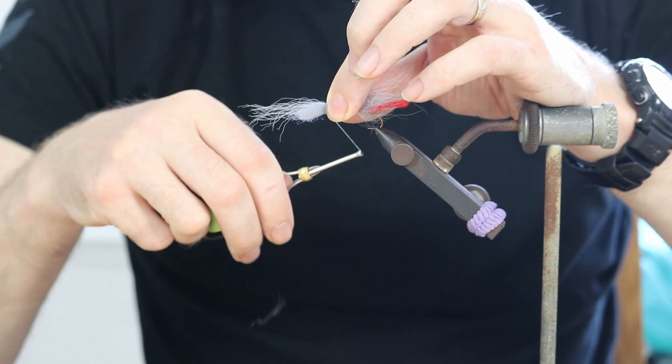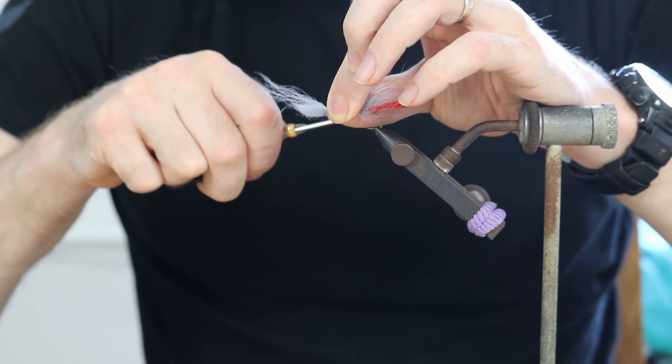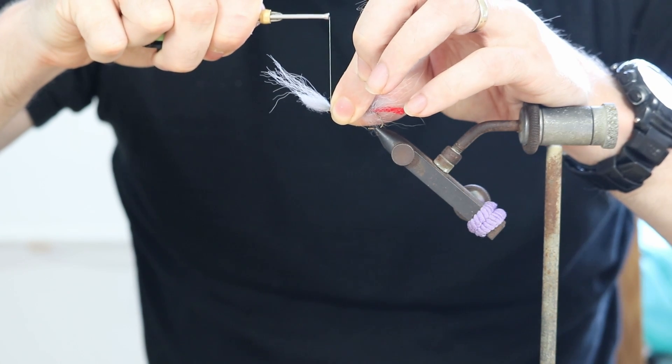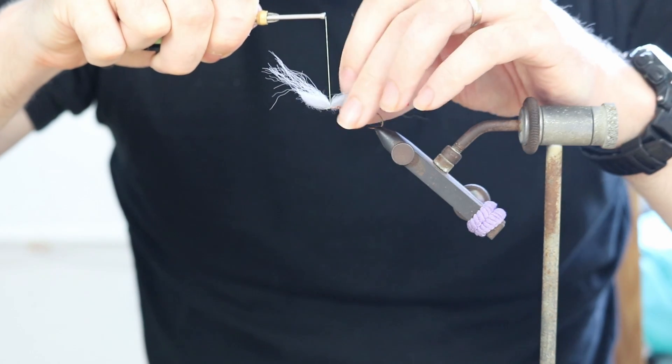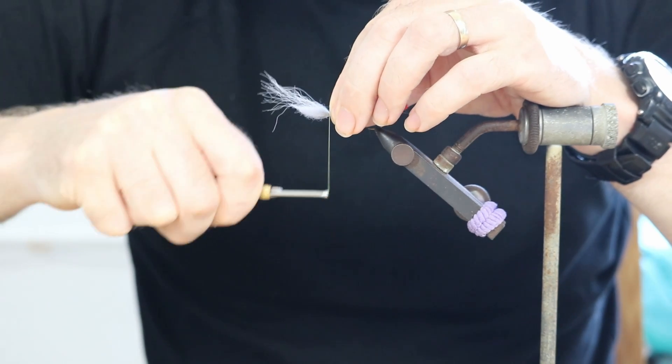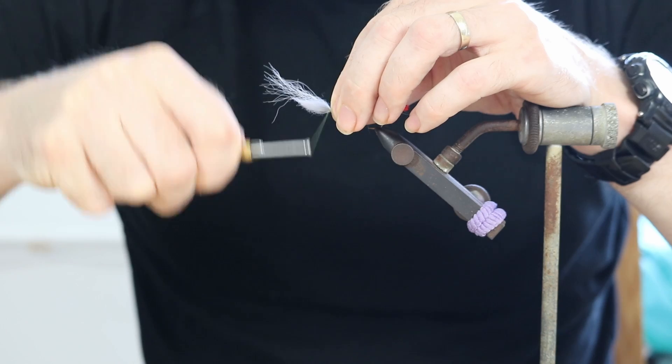Try and hold that with your fingers as well, bring the soft loop over, tighten down, tighten the thread. Make sure we have it sitting where we want. Pinch with your left fingers again.